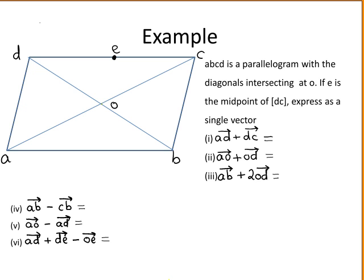This is an example of a question asking you to express as a single vector the addition or subtraction of two or more vectors. The first part asks you to find vector AD plus vector DC. To add these two vectors we will use the triangle law: we start at the beginning of our first vector and go to the end of our second vector. So the result is vector AD plus DC, which is the vector AC, found using the triangle law.